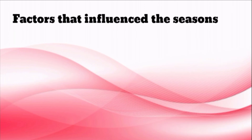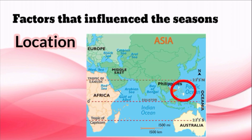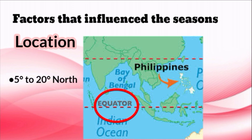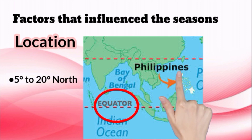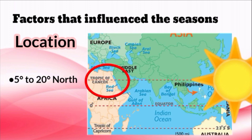What are the factors that influence the seasons? One of these factors is location. The Philippines is a tropical country because of its location near the equator. It lies between 5 degrees to 20 degrees north of the equator. Since it is in the tropics, it receives more exposure to the sun.